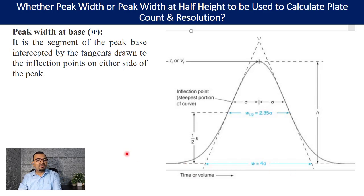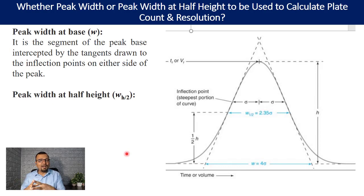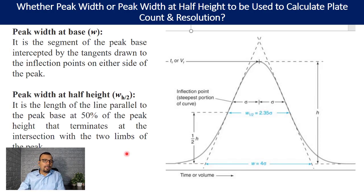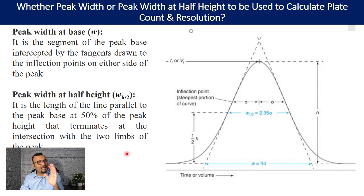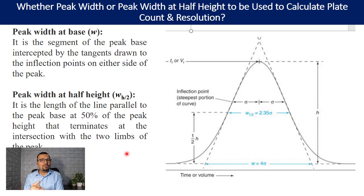Once you understand peak width at base, let us understand what is meant by peak width at half height. It is the length of the line parallel to the peak base at 50% of the peak height that terminates at the intersection with the two limbs of the peak. When calculating peak width at half height, you do not need to draw tangents — there is no mention of drawing tangents in its definition.